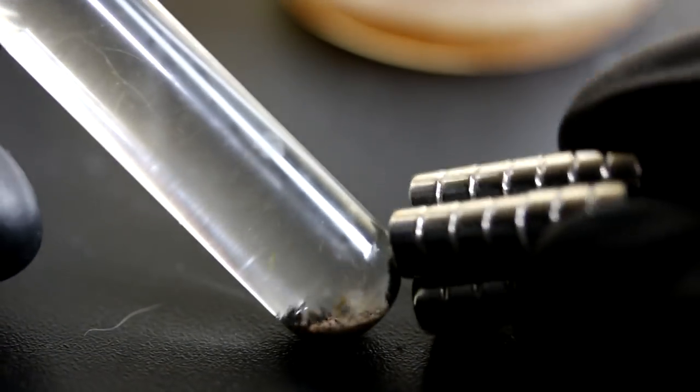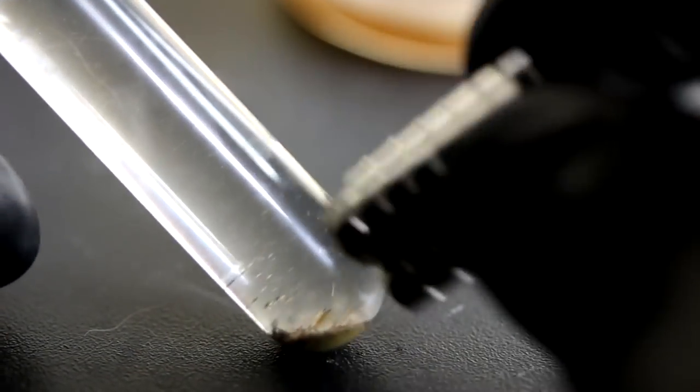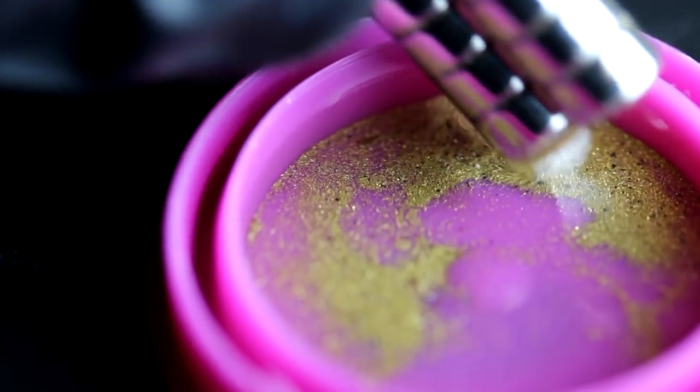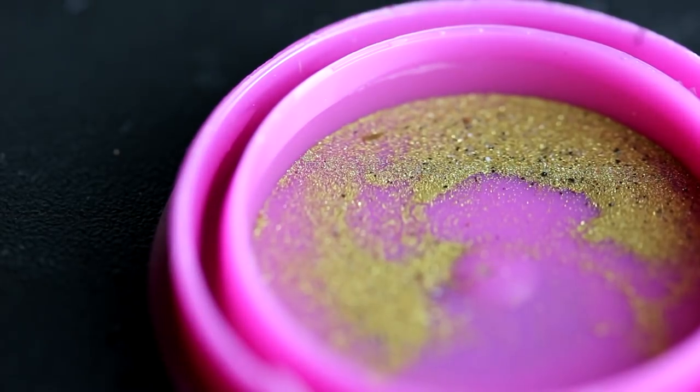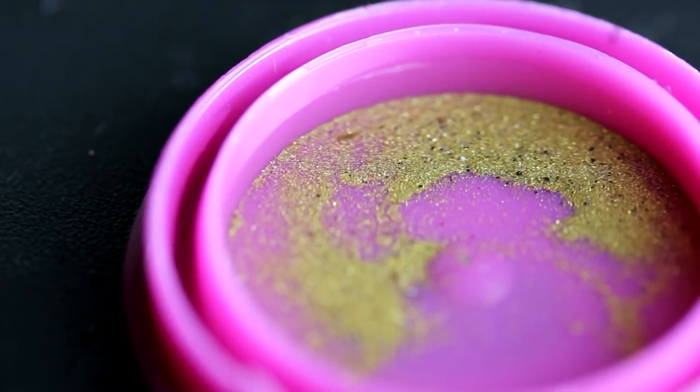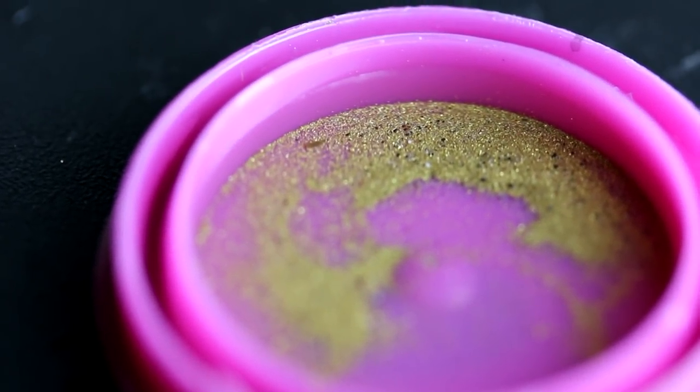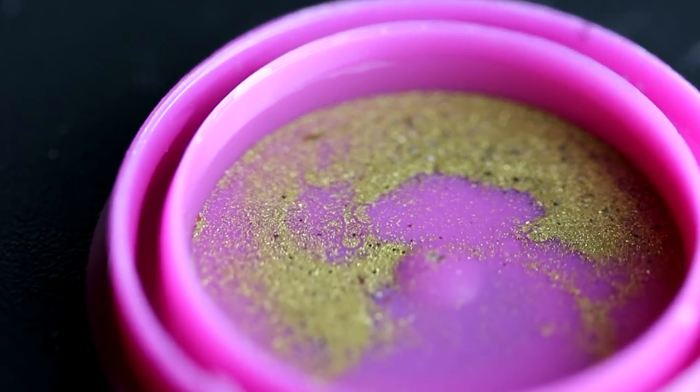But fortunately that should be pretty easy to remove, just use a magnet. There does seem to be a few non-magnetic grains. That's probably hematite or some other heavy mineral. Looks like there might be a few zircon crystals in the mix. But that is pretty much pure gold.